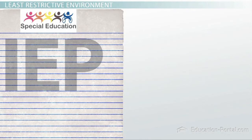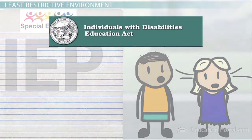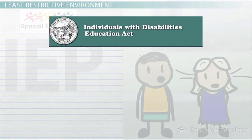Individualized education programs and least restrictive environment are the two most well-known principles of the Individuals with Disabilities Education Act. However, there are four...